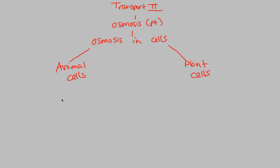What you want to figure out first is: do we have a cell wall? A cell wall is an important component in figuring out how osmosis is going to take place. Animal cells, of course, have no cell walls, so it's important to write that down. We'll see why right now. There are a couple of consequences to not having cell walls. I'm going to give you a situation.